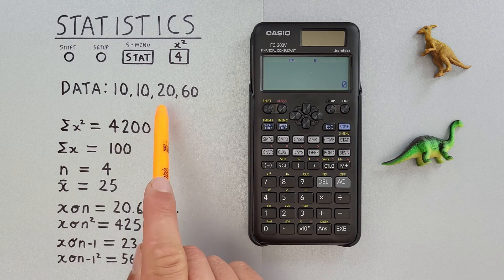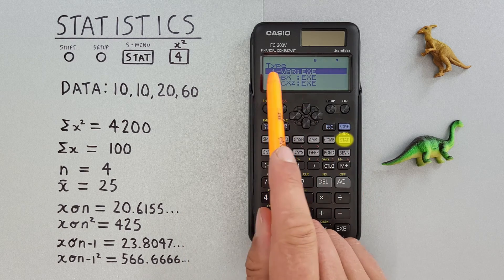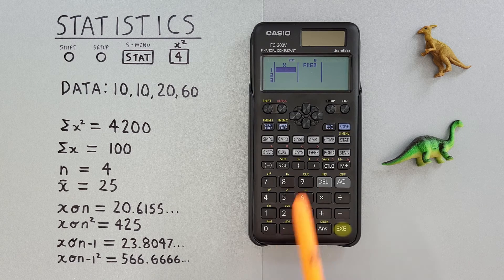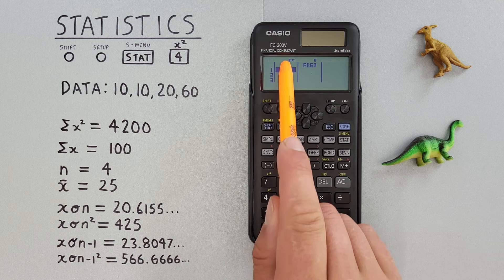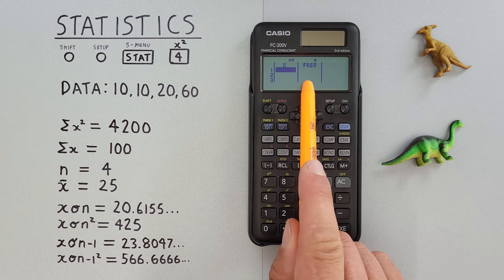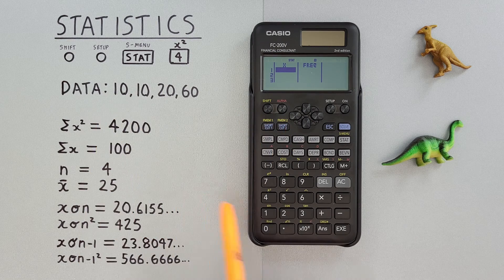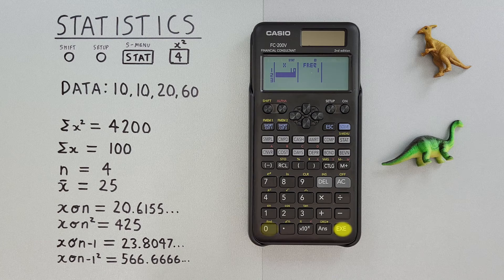Now let's enter our dataset again. So we press stat and choose one variable. And now we see we have two lists here, one for our x or our variables, and one for our frequency. So we start by entering a 10.